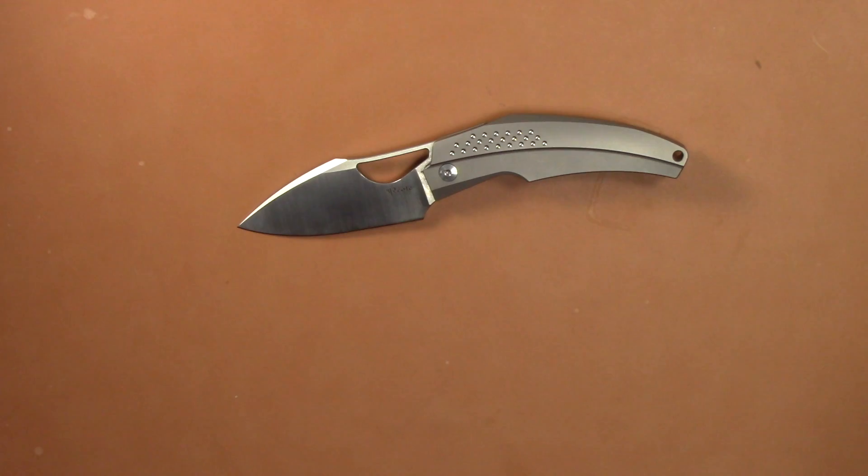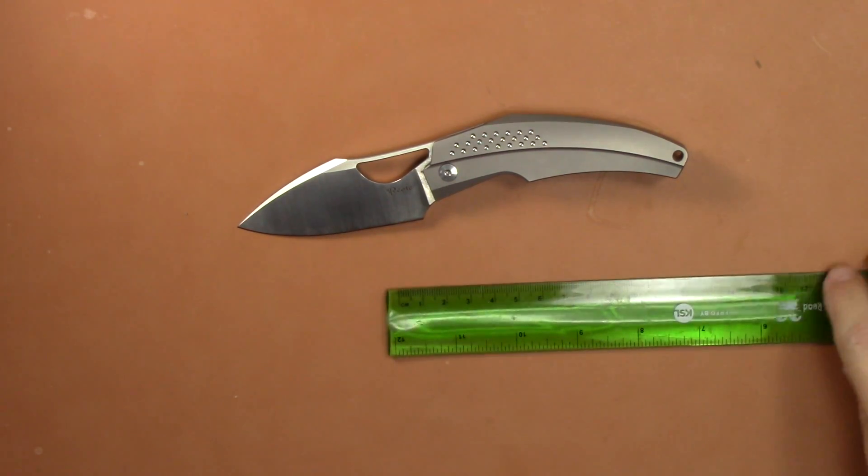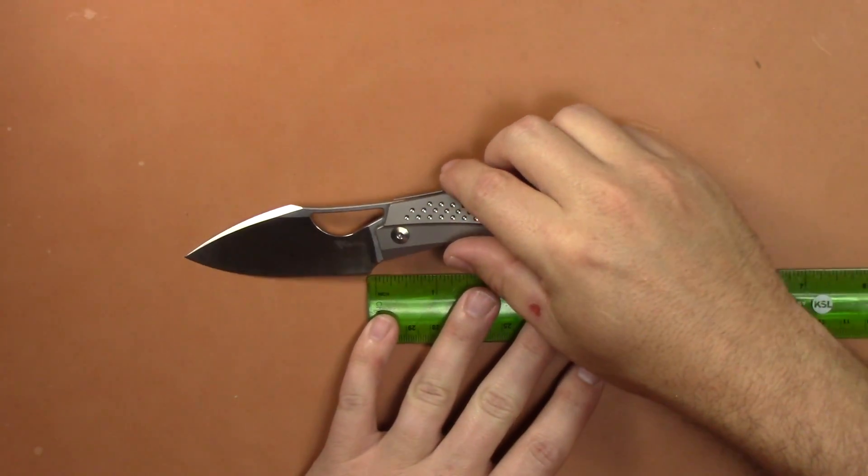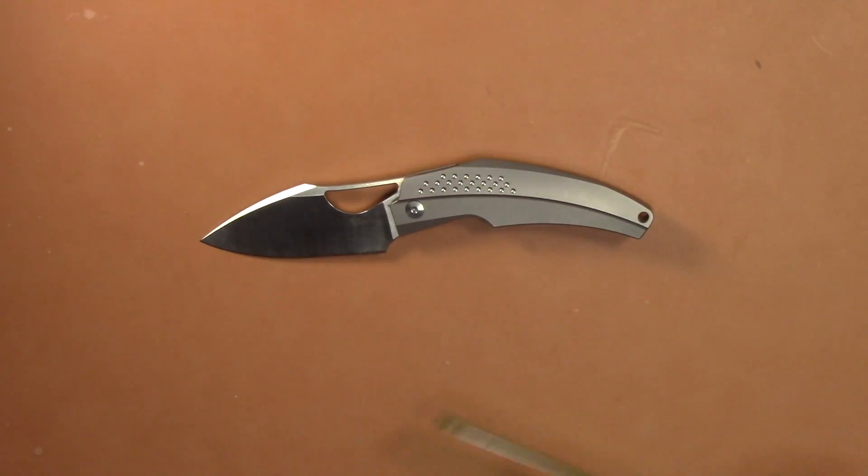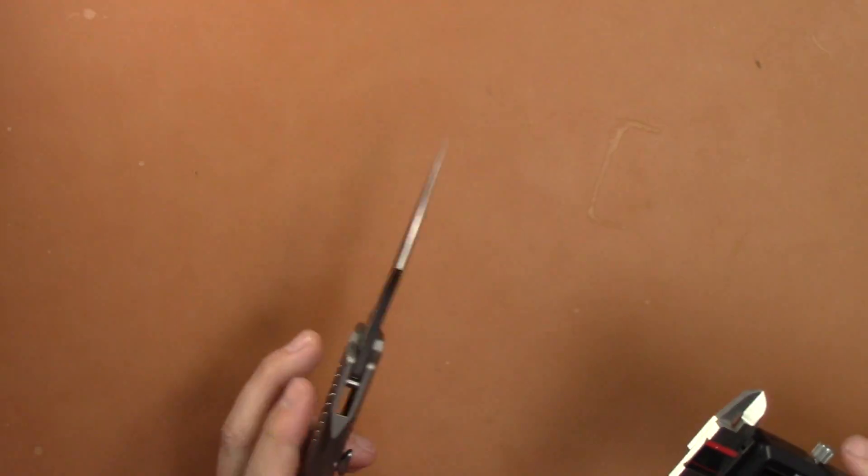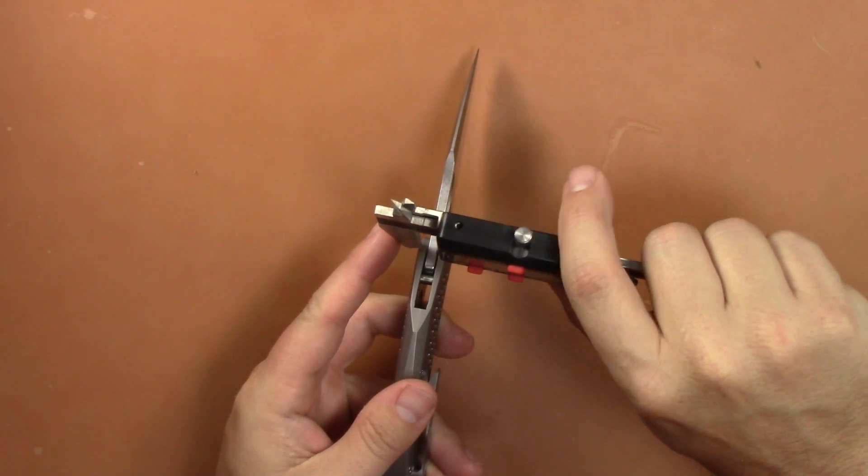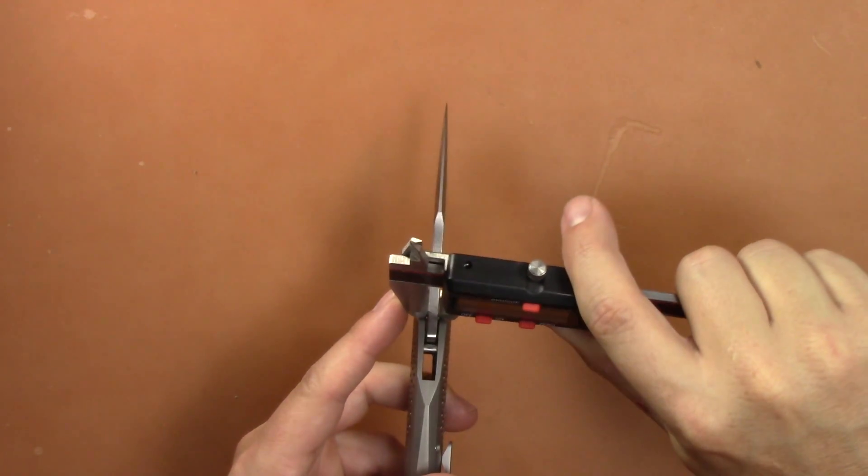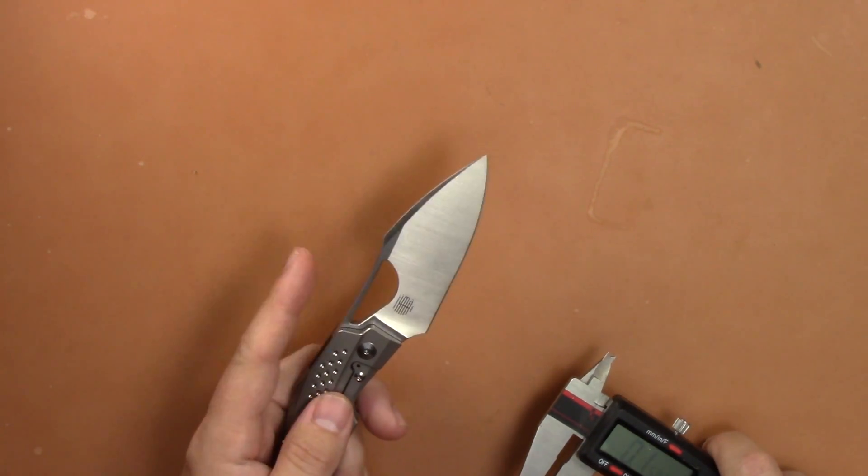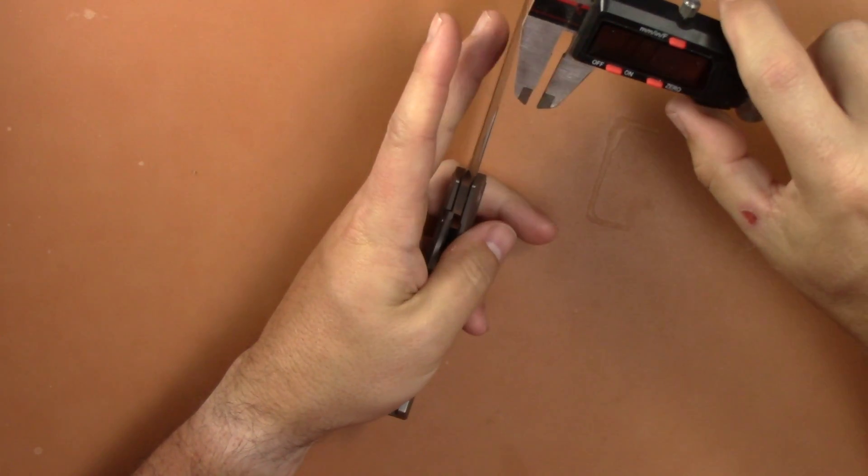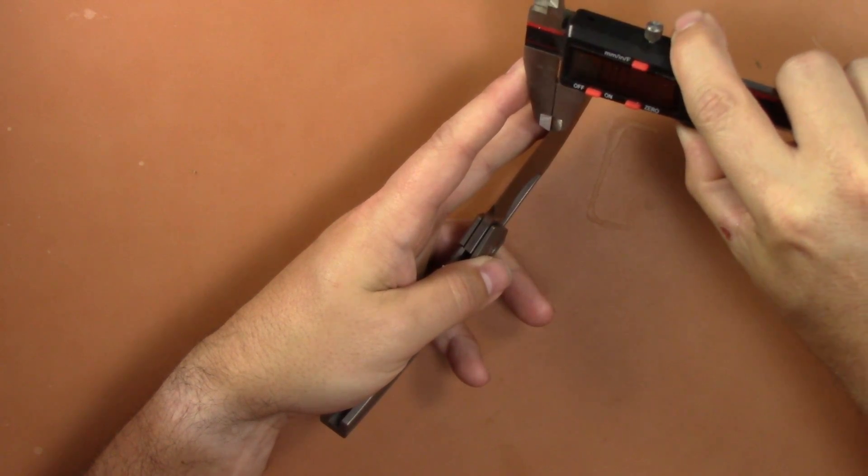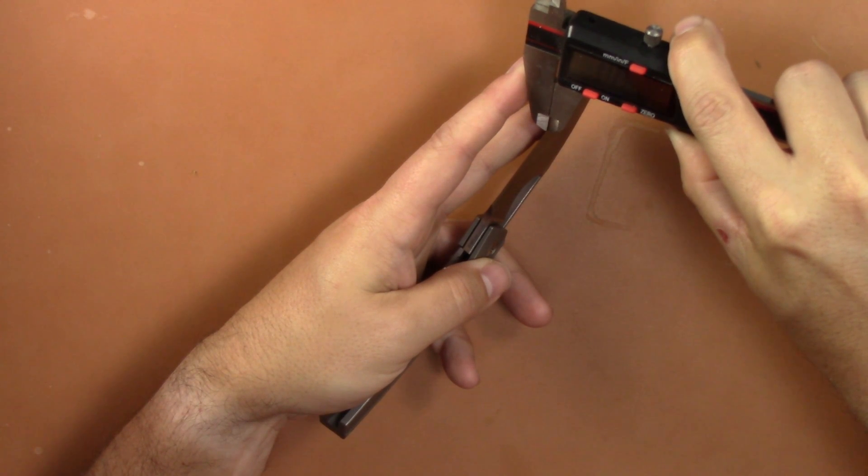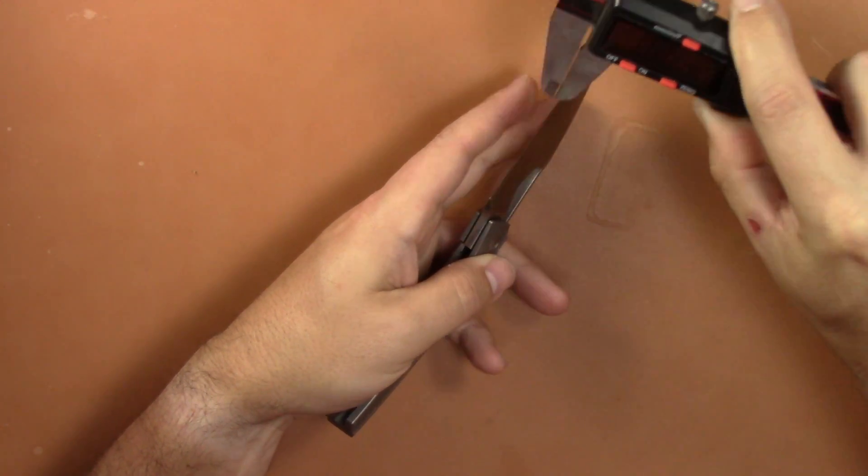Let's go ahead and verify some of those specs. Sometimes they're not always listed correctly. Yeah, about a 4 inch handle. What I wanted to measure as well was the blade stock, I think it feels thicker than that to me. See yeah, I'm getting .15, they were saying .11, so definitely off on that. I thought it was a thicker blade stock and that always felt thicker than that.